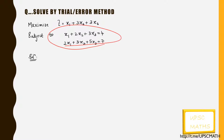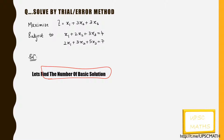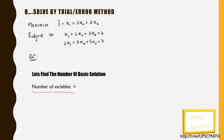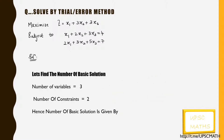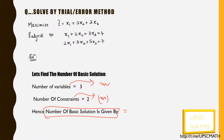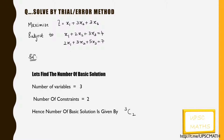Since the question is already expressed in standard form we will skip that part. Let's directly find the number of basic solutions. We have 3 variables (x1, x2, x3) and 2 constraints. If the number of variables is m and the number of constraints is n, then the number of basic solutions is mCn. In this case it becomes 3C2, which is 3.